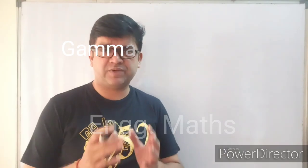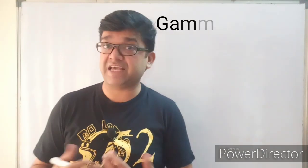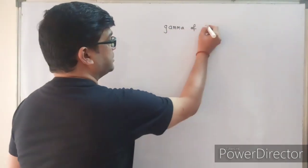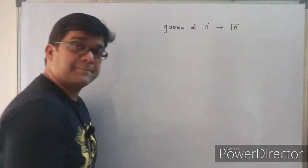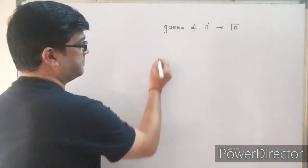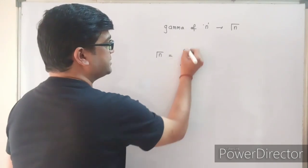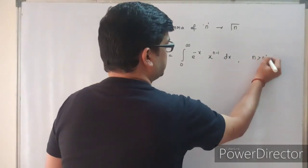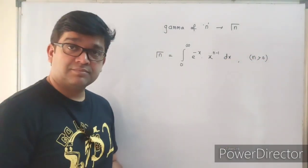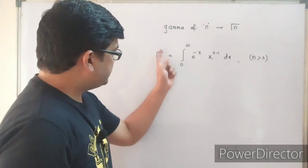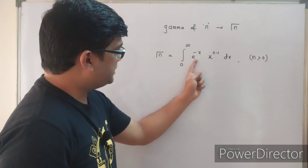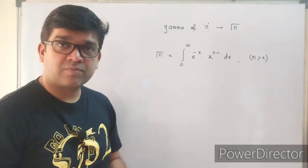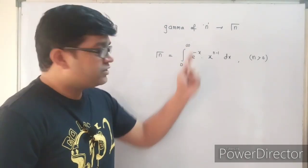Welcome back. Today we are going to discuss a very important topic from engineering mathematics called the gamma function. Gamma of any number n is denoted as Γ(n), and it is defined as the integral from 0 to infinity of e raised to minus x into x raised to n minus 1 dx, where n has to be positive.